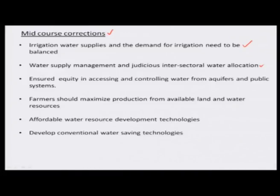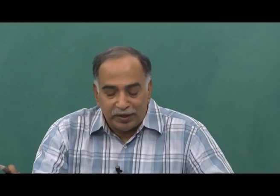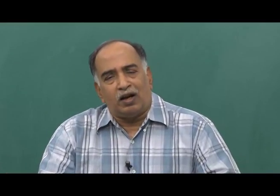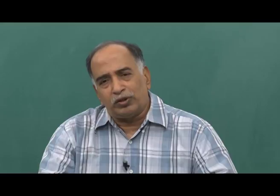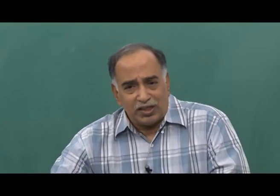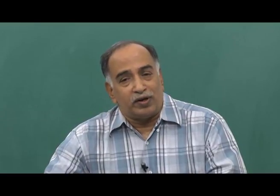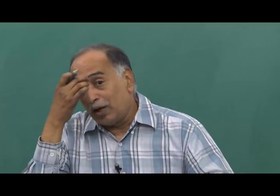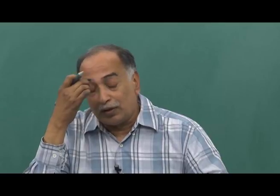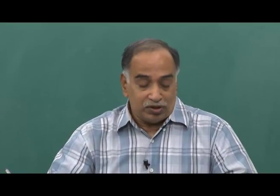Another area is water supply management and intersectoral water allocation. Whenever large reservoirs were constructed, many of them in the 1960s were built only for irrigation and power supply. Over time, water supply for domestic use was also included from the same reservoirs. So allocations for agriculture, drinking water, environmental needs, and industries all need to be balanced. Depending upon sectoral growth, we have to manage the existing water resources available in the reservoir — that is what is meant by allocation.